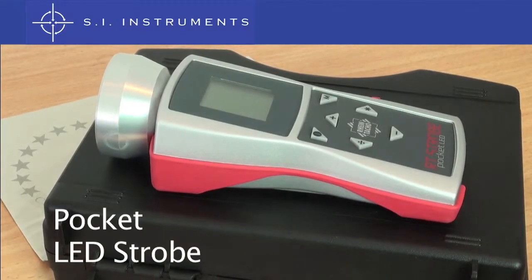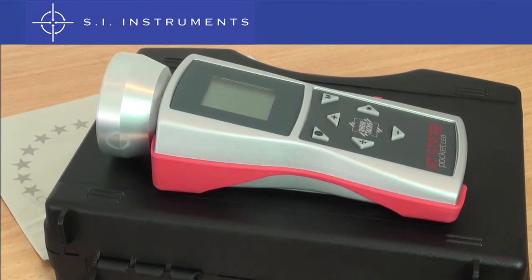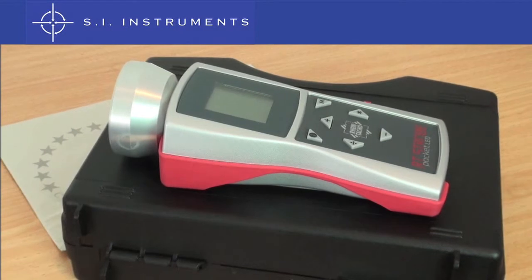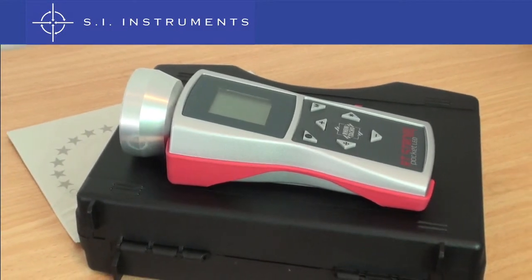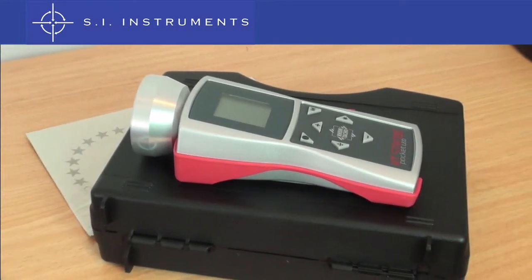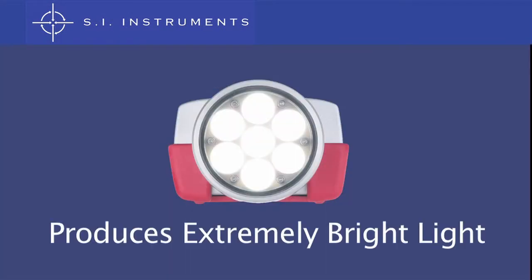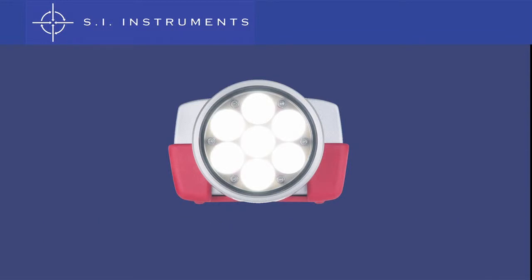RheinTacho's Pocket LED Strobe provides reliable measurement and indication of rotational speeds. It can measure and show the movement of rotating and oscillating objects at the touch of a button and can be operated with one hand. The unit is well protected against dust and water and produces extremely bright discrete light well suited for Australian conditions.